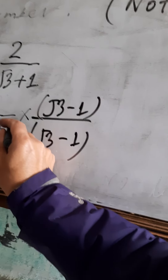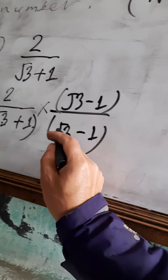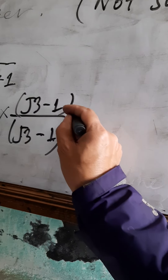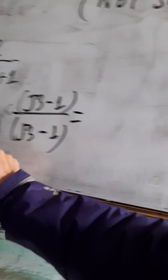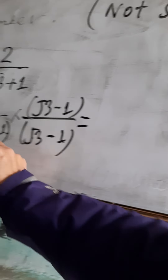This is a function. A plus B into A minus B is equal to A square minus B square. This is a formula.